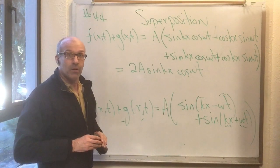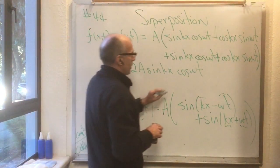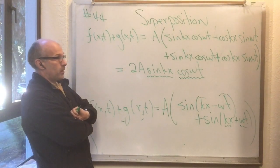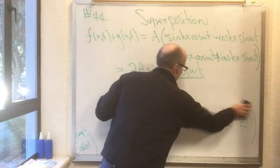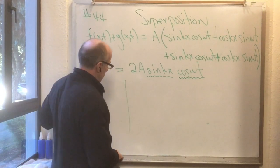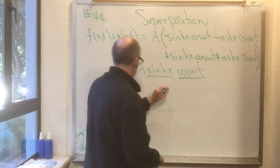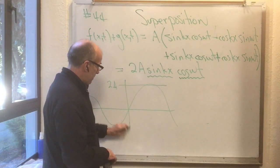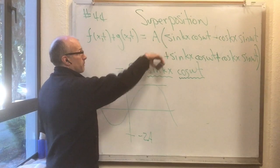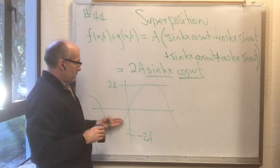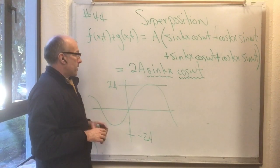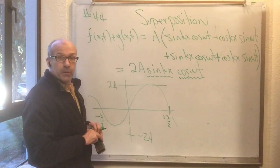This is called a standing wave because you have a function of time multiplied by a function of position. At t = 0, cosine(ωt) = 1, so we just have 2A sin(kx), meaning the sum goes all the way up to 2A and down to −2A — twice the amplitude of either individual wave.